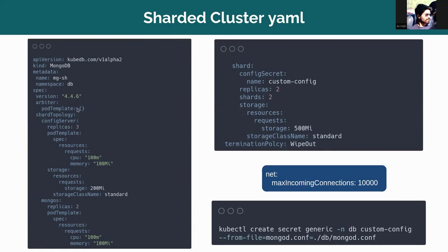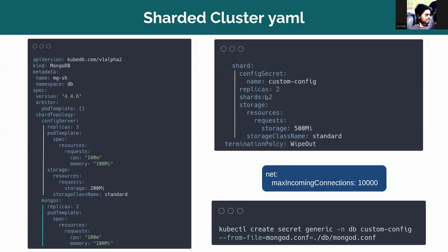The arbiter pod template has been set to default, so I am using the default arbiter pod template. This is the config server spec, where there will be three replicas and each of the pods has 100 MB of memory. This is the storage of the config server pods. This is the mongos pod spec — there will be two replicas, and this is the pod template of the mongos pod.